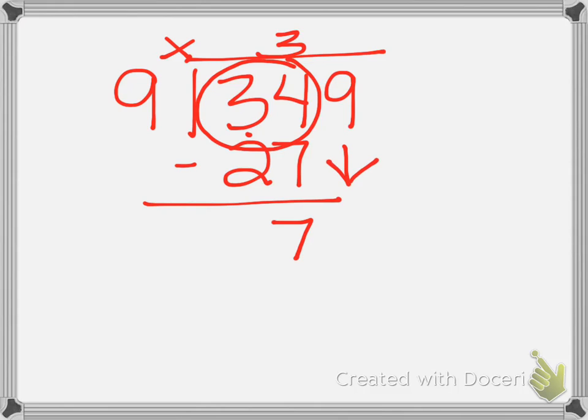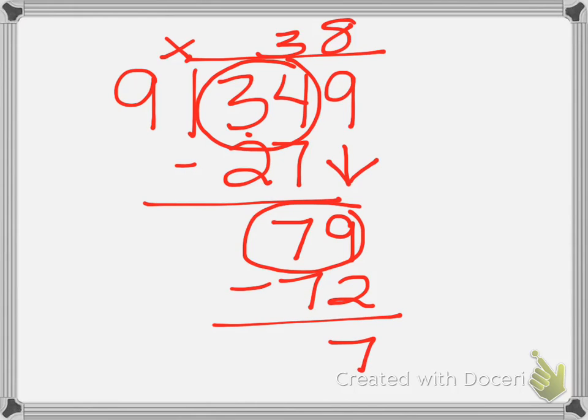I'm now going to bring down my 9 in the ones place and ask how many times does 9 go into 79 ones? And they can go through and say, I know 9 times 7 is 63, 9 times 8 is 72, and that's as close as we can get. So we put our 8 up top and multiply 8 times 9, and that gives us 72. We subtract it out, and we have 7.